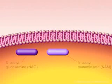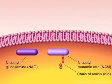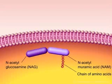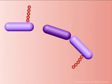Synthesis of the peptidoglycan and ultimately the bacterial cell wall occurs in a number of stages. One of the first stages is the addition of five amino acids to N-acetylmuramic acid. Next, N-acetylglucosamine is added to the N-acetylmuramic acid to form a precursor of peptidoglycan.